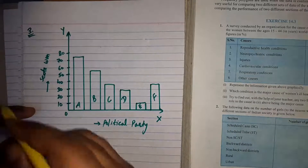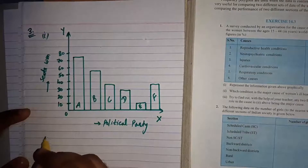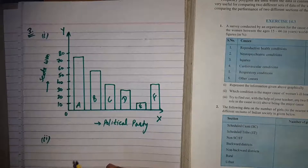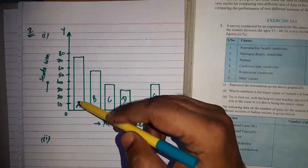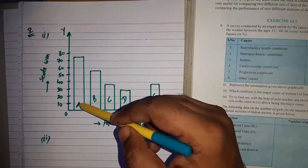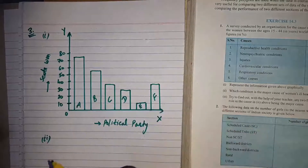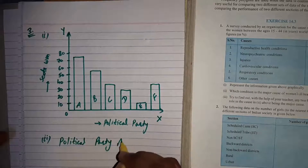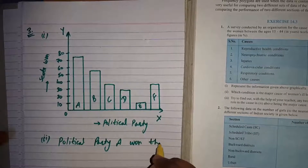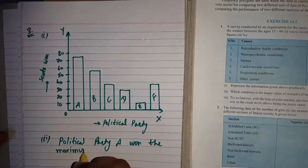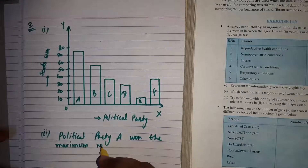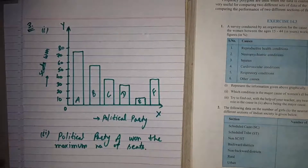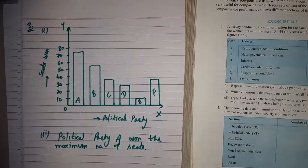The second part asks which political party won the maximum number of seats. From the bar graph, political party A won the maximum number of seats. That's sufficient for today's class.